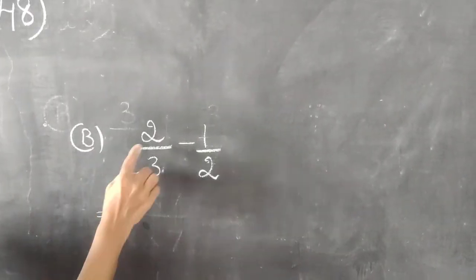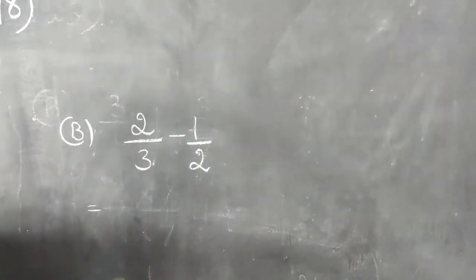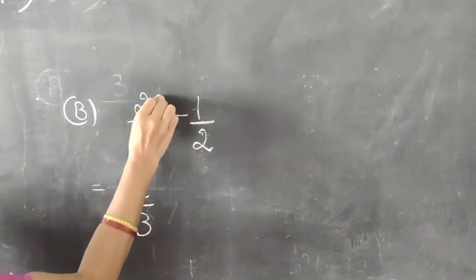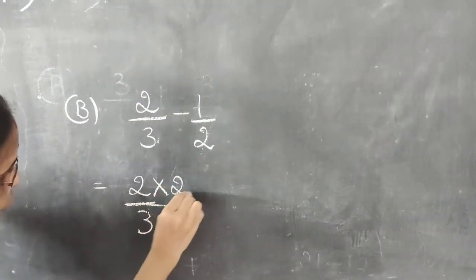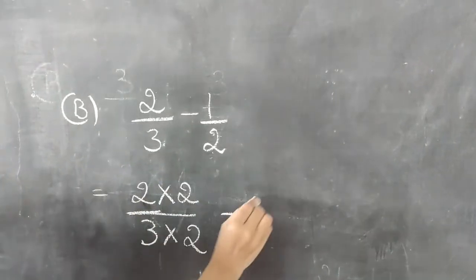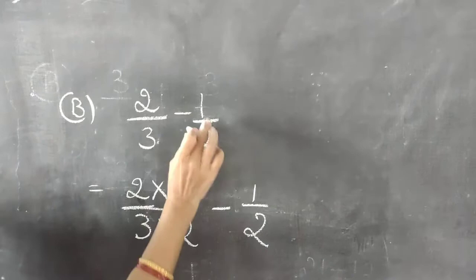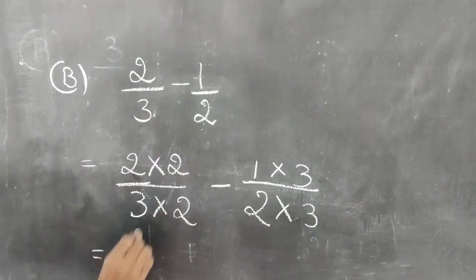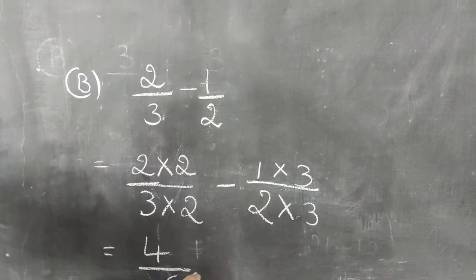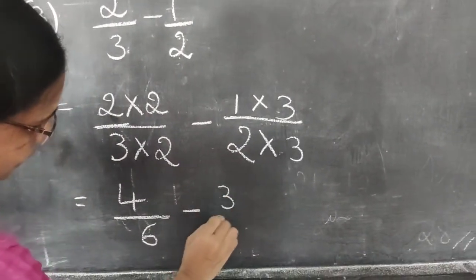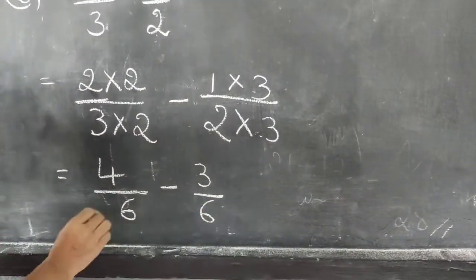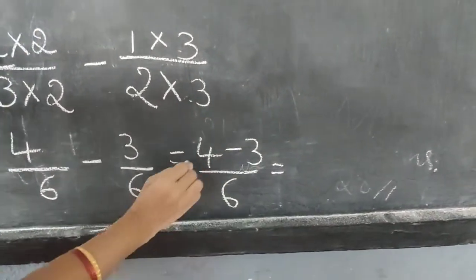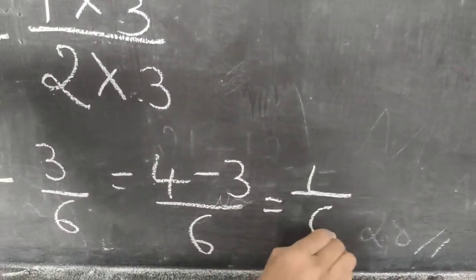Now: 2/3 minus 1/2. This is an unlike fraction. First, make it a like fraction. For 2/3, multiply both numerator and denominator by 2: 2 into 2 and 3 into 2. For 1/2, multiply by 3: 1 into 3 and 2 into 3. So 2 twos are 4, 3 twos are 6, minus 1 three is 3, 2 threes are 6. Now 4 minus 3 divided by 6: 4 minus 3 is 1, so 1 by 6 is the answer.